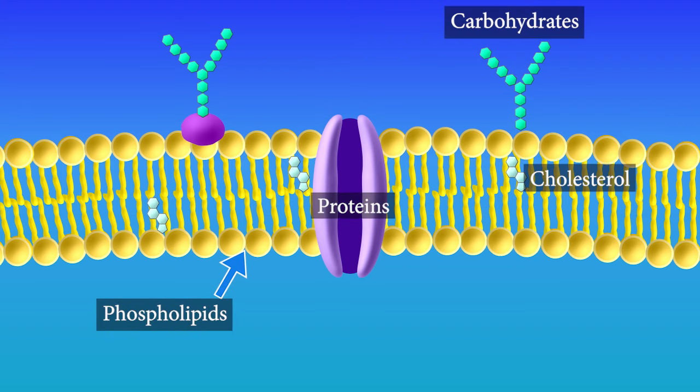All of these components work together to make the plasma membrane that surrounds all cells, a critically important barrier needed for all life on Earth.